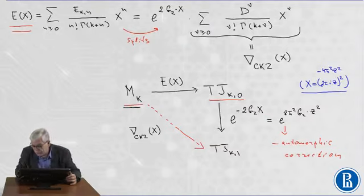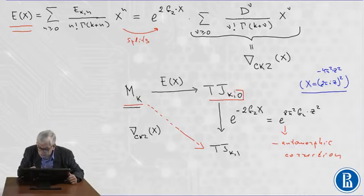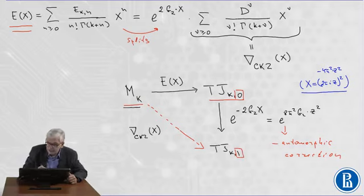So, minus or the inverse of atomorphic correction transforms the Jacobi type form of index 0 into index 1. And this is exactly the Coin-Kuznetsov-Zagier operator.